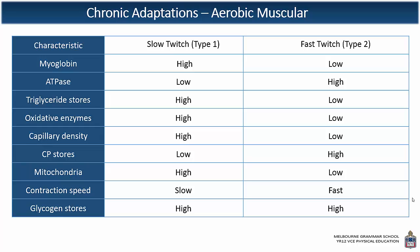In terms of contraction speed, slow twitch contracts at a slow rate and fast twitch at a fast rate. Our glycogen stores: because the slow twitch aerobic system uses glycogen as a fuel, and fast twitch uses glycogen for the anaerobic glycolysis system, they're both going to be reasonably high in terms of their storage.